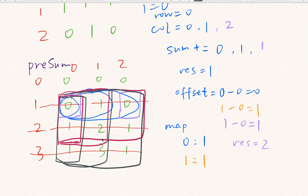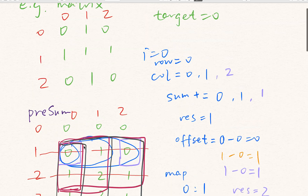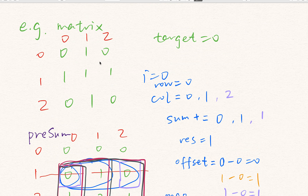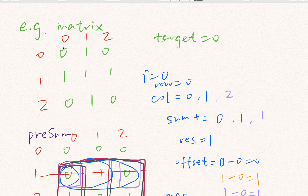How do we get all the submatrices in this matrix? A submatrix is defined by a top, bottom, left, and right boundary. We should fix one side — in my solution I fix the top row (row_start). For each fixed top row, we try all possible submatrices starting from that row.